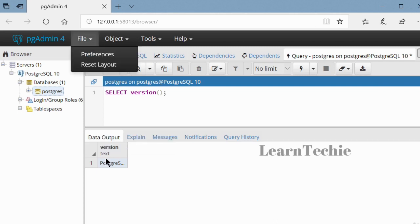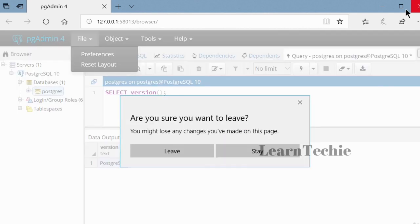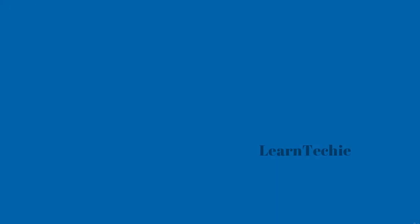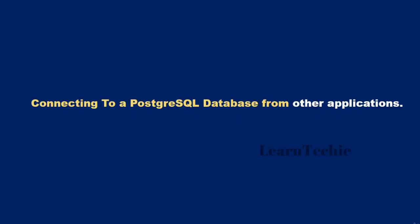To exit the PGAdmin tool, just click the X and it will ask if you're sure you want to leave — just say Leave and that exits the application. You can also connect to a PostgreSQL database from other applications — any application that supports the ODBC driver or the JDBC driver can be used to connect to a PostgreSQL database server. If you develop an application that uses an appropriate driver, it can connect to PostgreSQL using that driver.